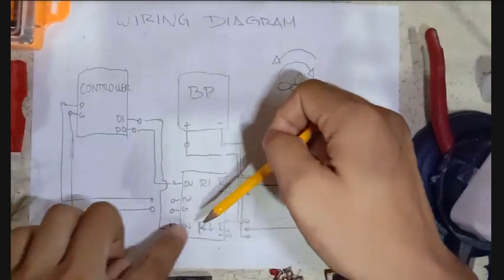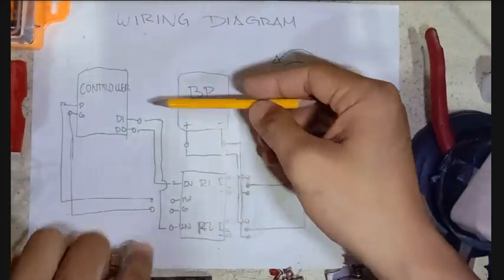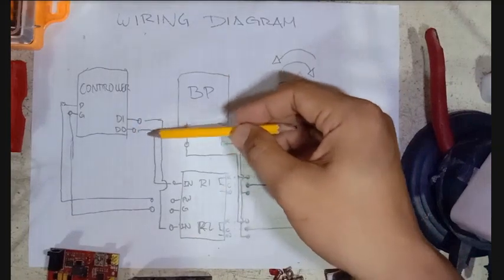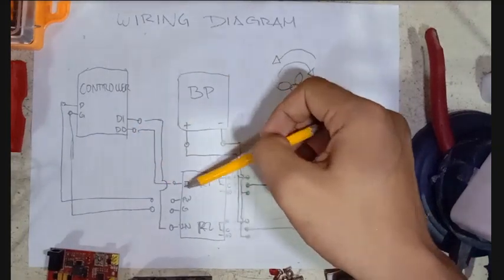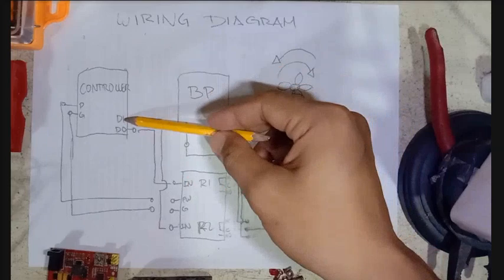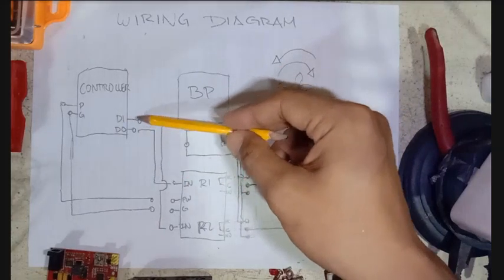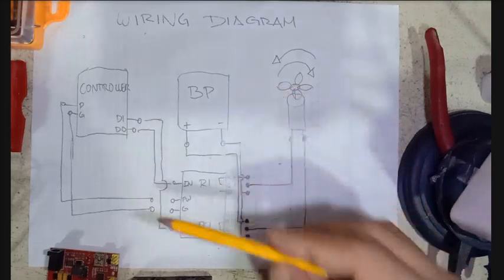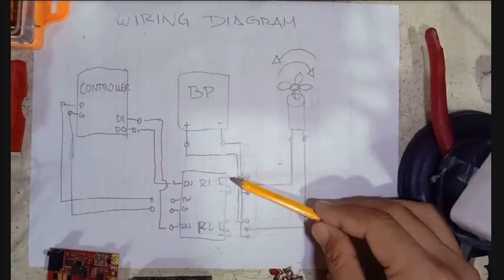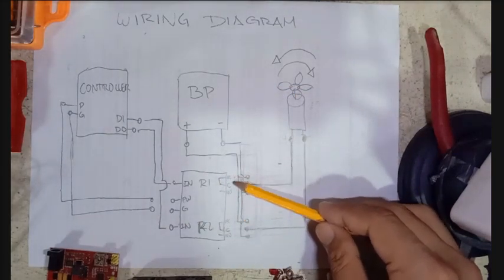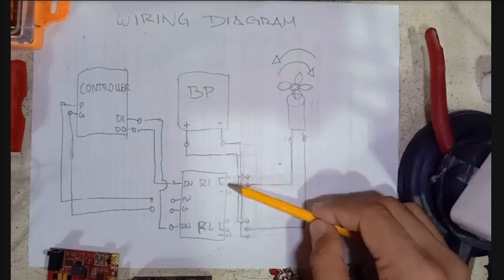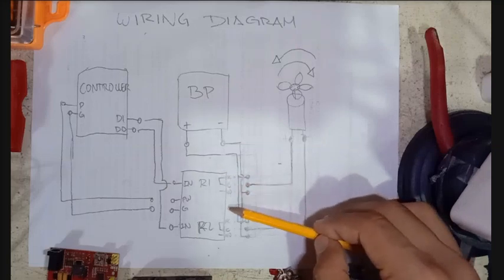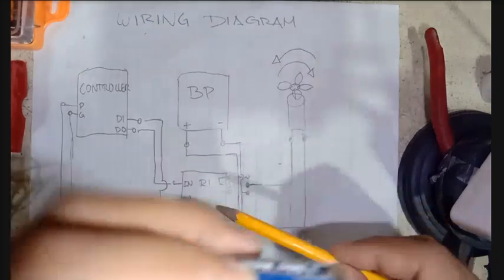Okay, here the digital output zero will be used to trigger our first relay and the second digital output will trigger our second relay. On the other side of our relays are the pins. For the first relay, the normally closed, the common, the normally open, and same case with the second relay.